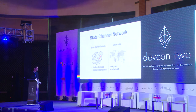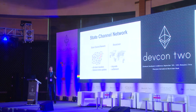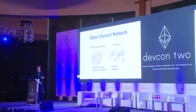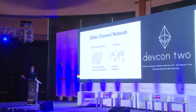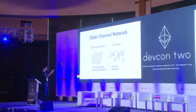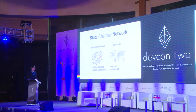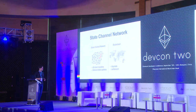What we do is we have many participants who have state channels with each other — say every participant has five or 50 state channels with others — and together they form a network. If two participants who don't have a direct channel want to transfer tokens, we can find a path in that network to transfer them. All transactions happen outside of the blockchain for the token transfers. We use the blockchain only to manage deposits and to eventually settle.